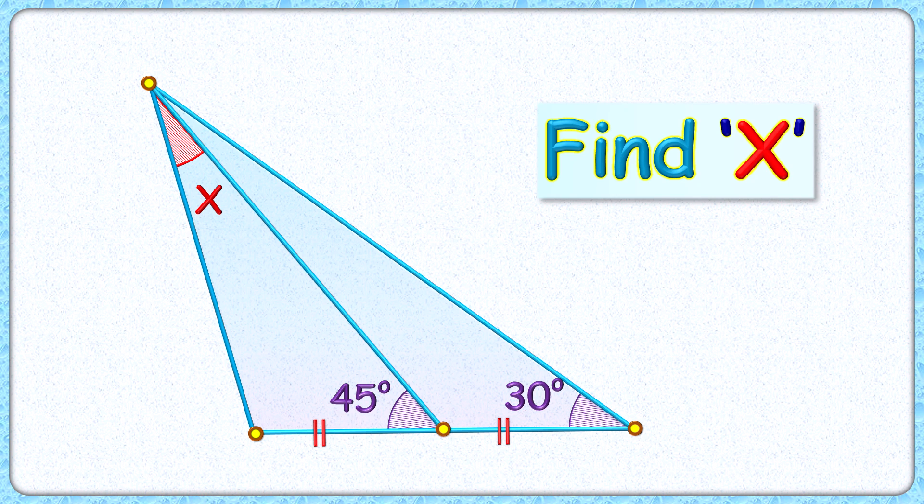Welcome everyone. This interesting question given to us is a triangle with one of the angles as 30 degrees. Also, the median of the triangle is making an angle of 45 degrees with the base. The exciting part is, with this limited data, we have to find the value of angle x.